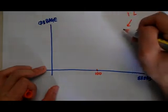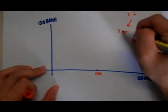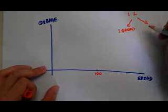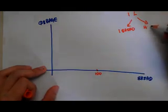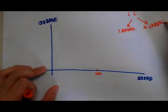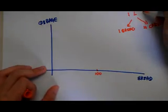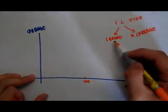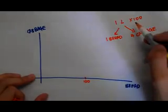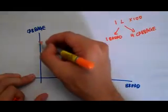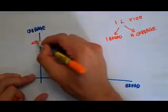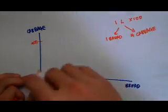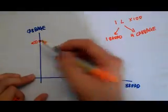One unit of labor can produce me one unit of bread — or alternatively, 4 units of cabbage. And I have a maximum of 100 units of labor. So I take that 100 and multiply by 1 to get 100 units of bread maximum, or multiply by 4 to get 400 units of cabbage maximum. If I just produce bread alone, I can produce 100 pieces; if I just produce cabbage alone, I can have 400 pieces.